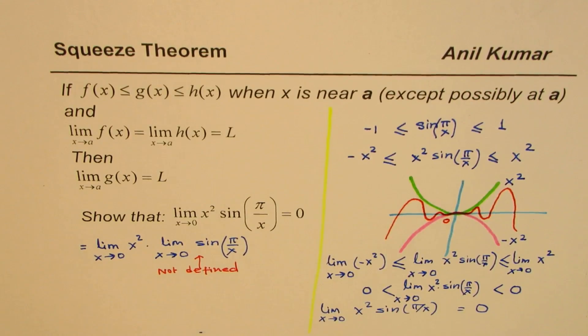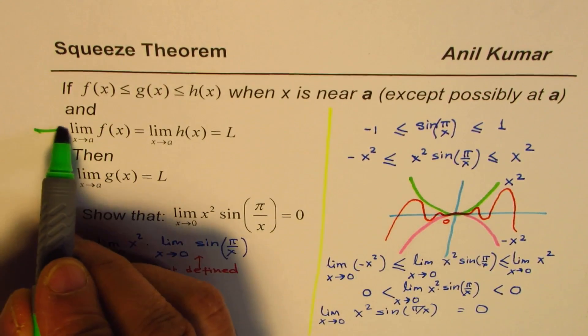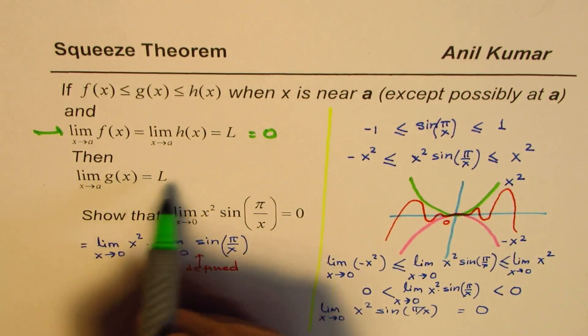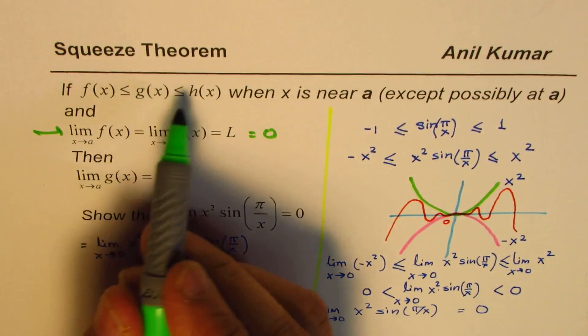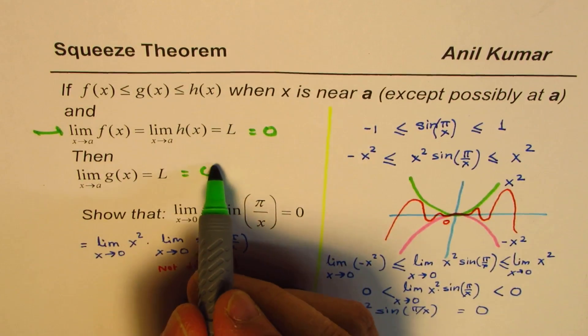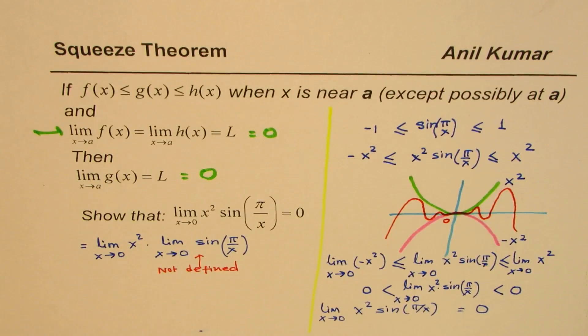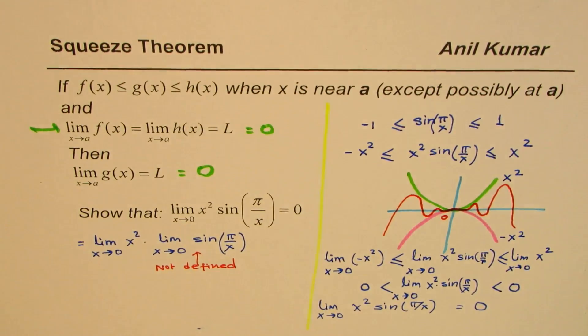So I hope now it is clear. We found that these two limits, in this case, L is equal to 0, and therefore, the limit of the function in between, which is squeezed in between these two, should also be 0.